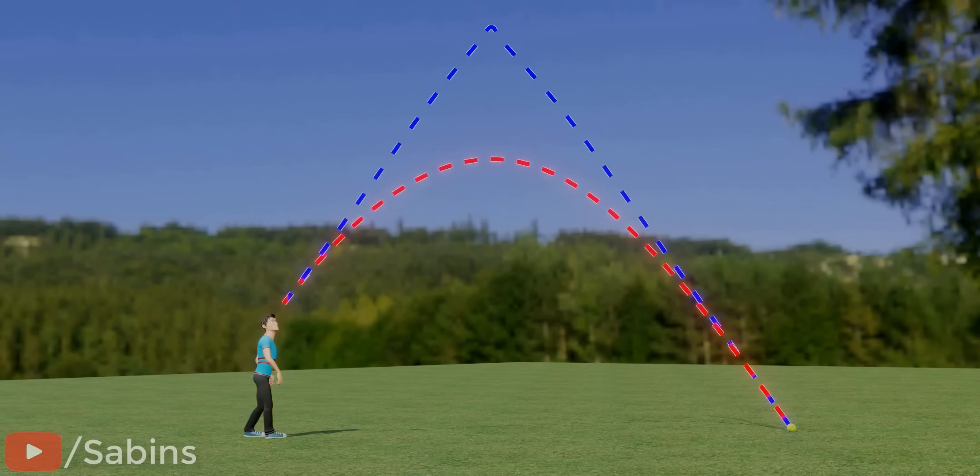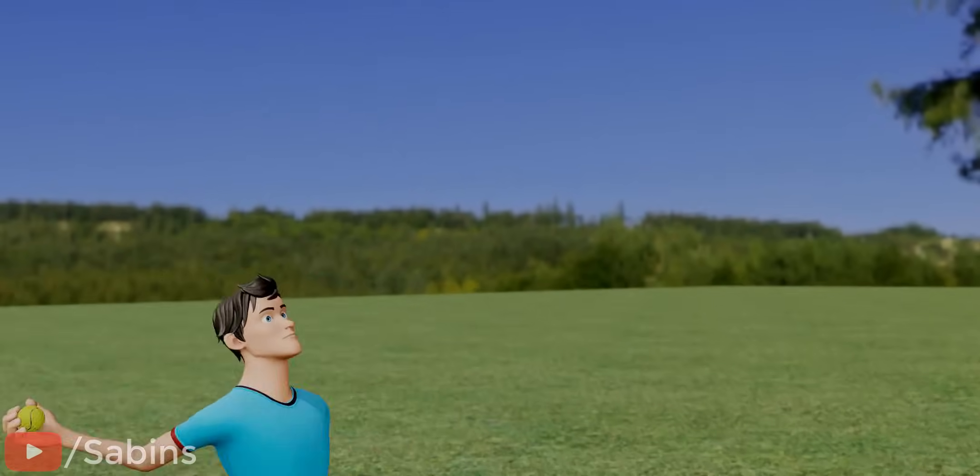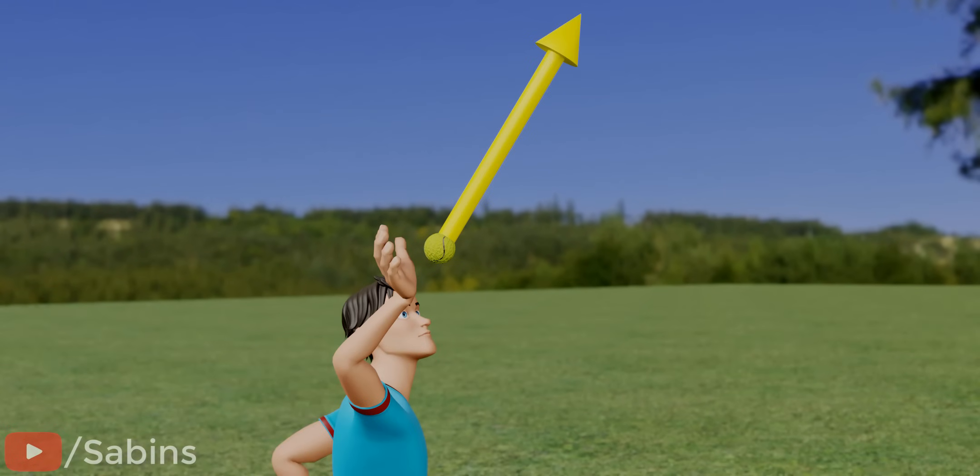This kind of projectile motion happens due to the effect of gravity. When thrown at an angle, the object has two components of velocity, one horizontal and one vertical.